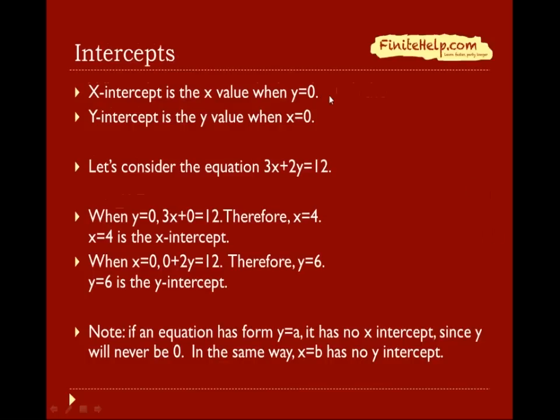x-intercept is the x value when y equals 0, and y-intercept is the y value when x equals 0. If we consider the equation 3x plus 2y equals 12 again, when y is 0, you simply put 0 in for y. So 3x plus 0 equals 12. When that happens, x equals 4. This x equals 4 is what the x-intercept is when y is 0. The same way we find the y-intercept by putting x equals 0. We have 0 plus 2y equals 12, and y equals 6. Note that if the equation has the form y equals a, then it has no x-intercept because y will never be 0. In the same way, x equals b has no y-intercept.